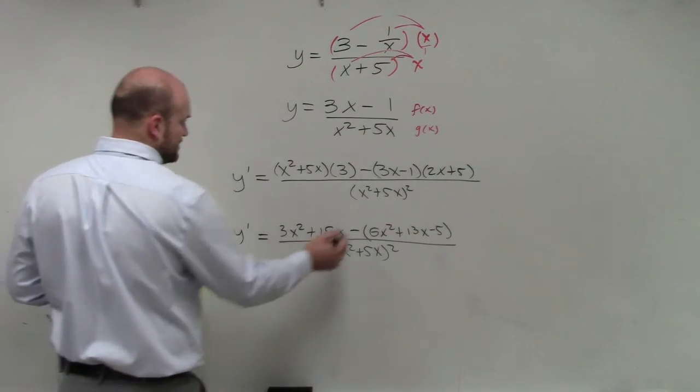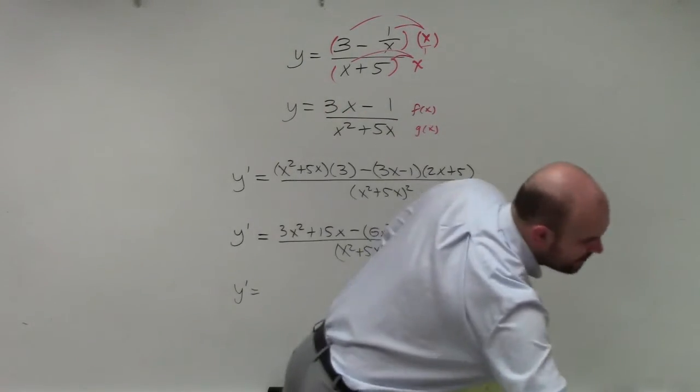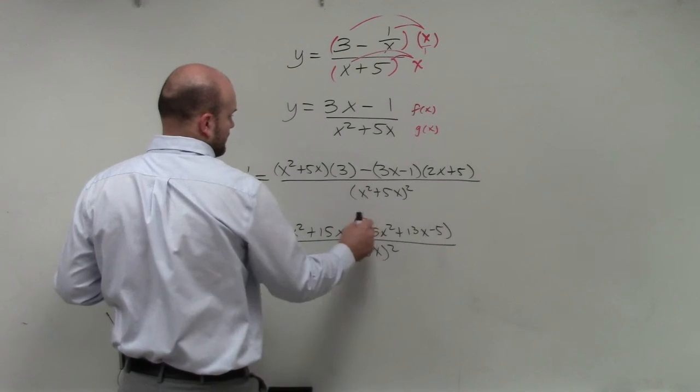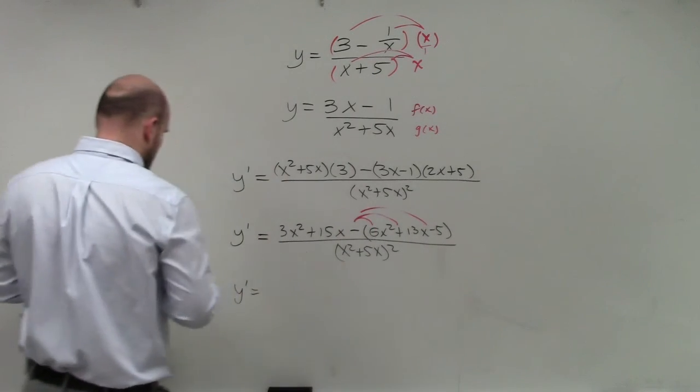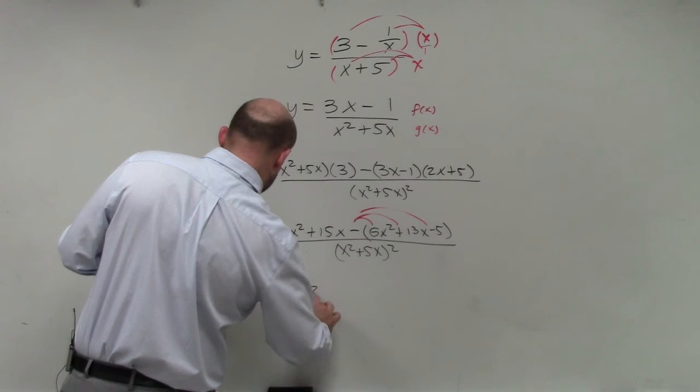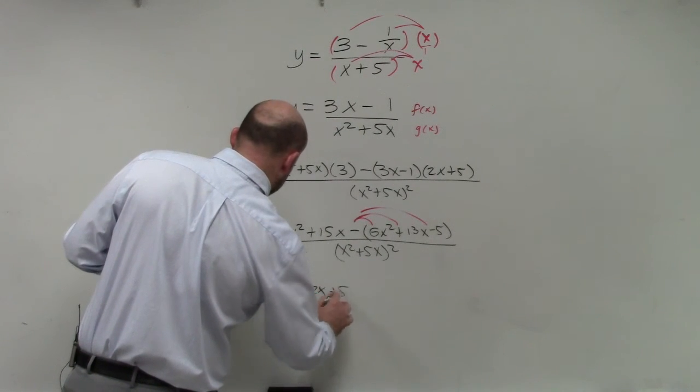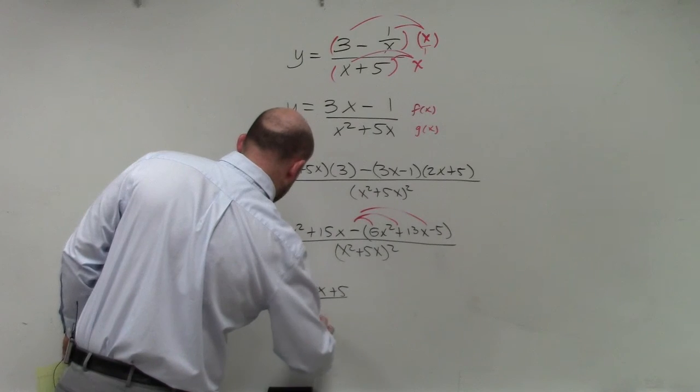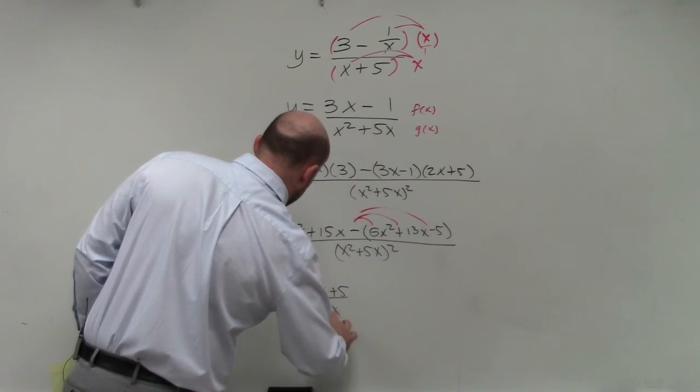Y prime equals, now you distribute the negative. And my final derivative answer is a negative 3x squared plus 2x plus 5 over x squared plus 5x squared.